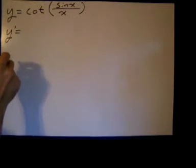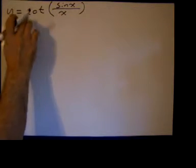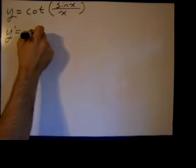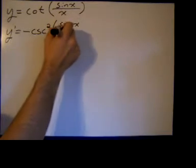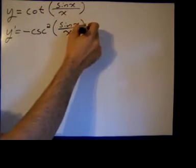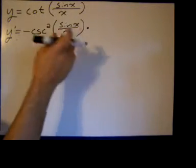Y prime equals the derivative of the outside. The derivative of the cotangent is the negative cosecant squared of the argument, which in this case is sine of x over x. Then we multiply by the derivative of the inside.